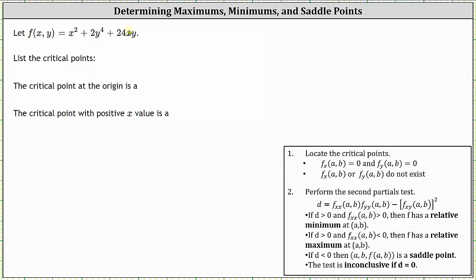We're given the function f of x comma y and asked to list the critical points in the form of x comma y, and then determine whether the function has a relative min, relative max, or saddle point at the critical points. To find the critical points we locate the points where both first order partial derivatives are equal to zero or do not exist, and then to determine whether we have a relative min, max, or saddle point we perform the second partials test.